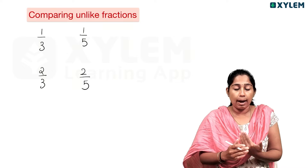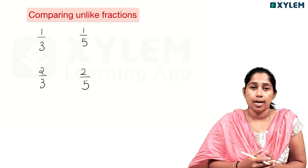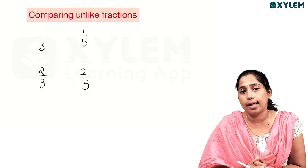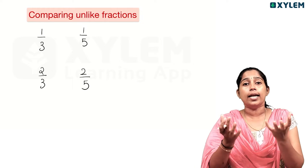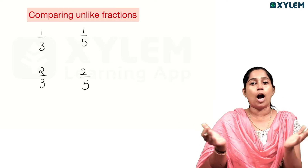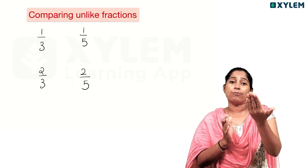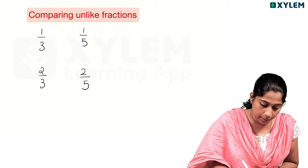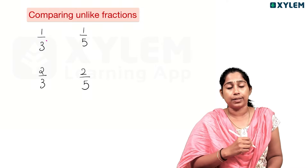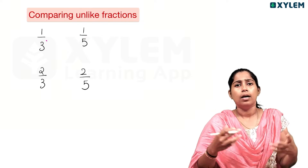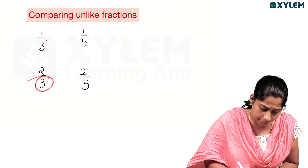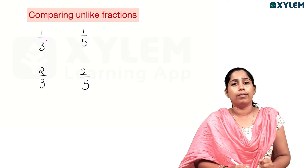This is comparing unlike fractions. Unlike fractions have different denominators. For example, the denominator of one fraction is 3 and the other is 5 — they are different denominators.